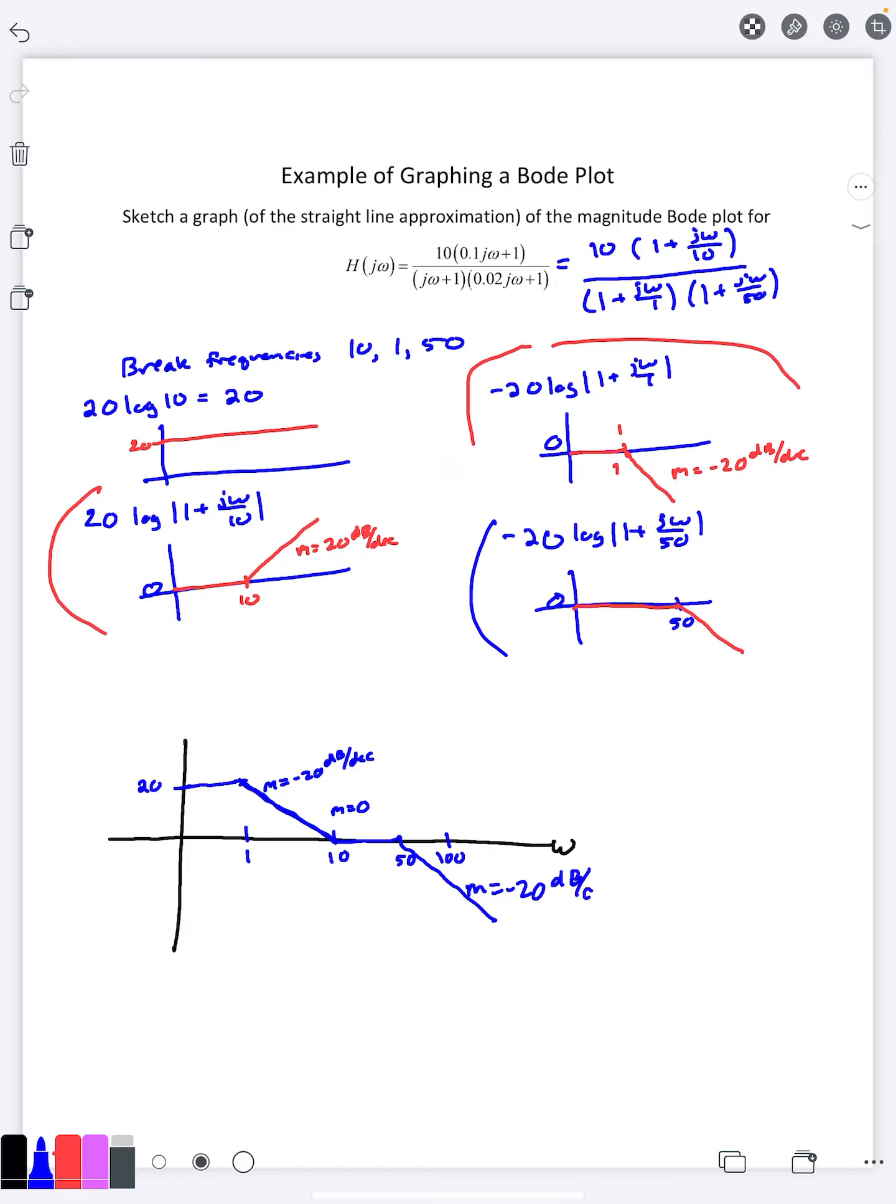So whenever I see graphs, I want to see where is the flat? Where is it at an angle? I want to know what the slopes are, and I want to see all the break frequencies appropriately marked to get the full picture of the Bode plot.